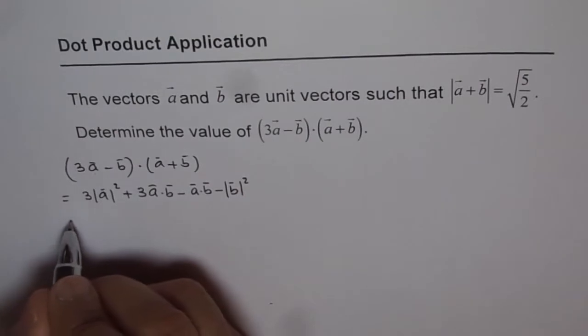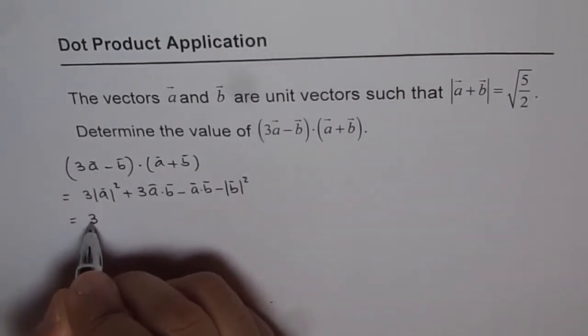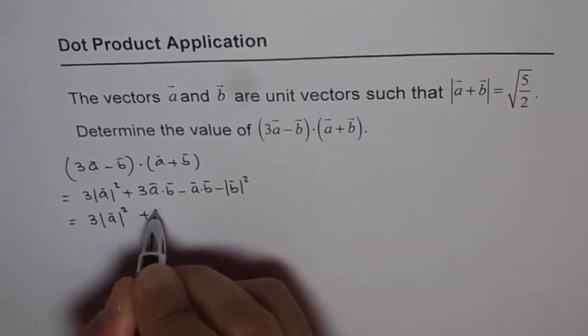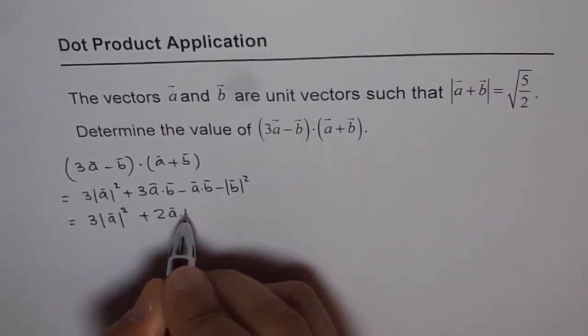And here you get minus absolute value of b squared. Now, in this equation, you have a dot b in between. How will you find that? That is the kind of question which you need to answer to continue from here onwards.